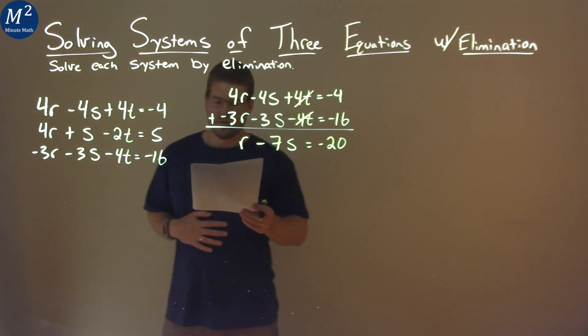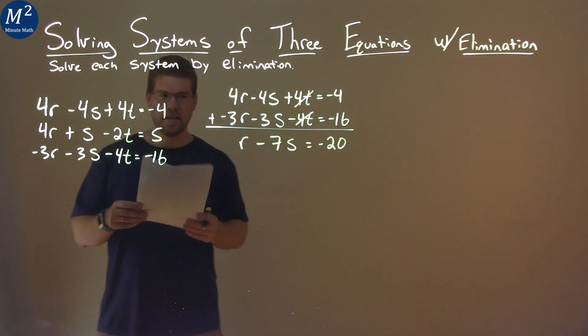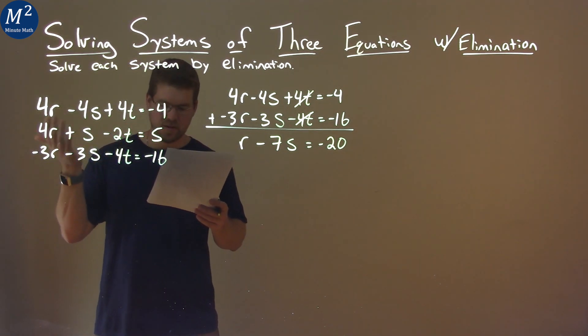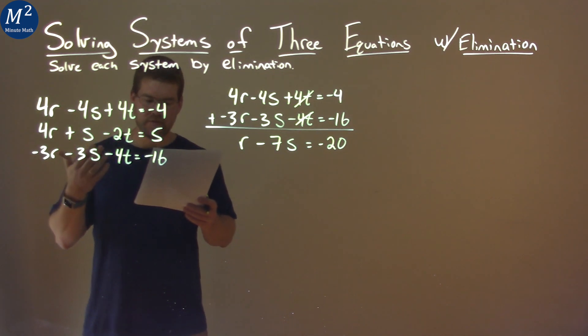And negative 4 plus negative 16 is negative 20. All right, so what else can we do? Well, I don't really see another way I can add two equations right away that t is eliminated. But I can adapt some equations here.